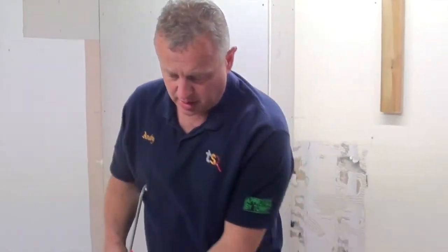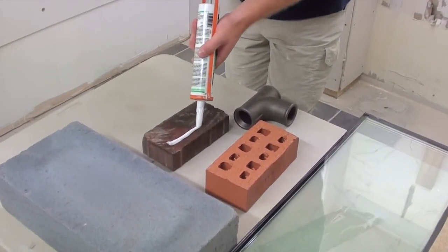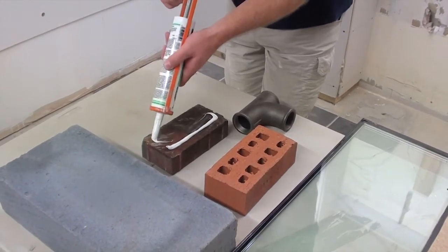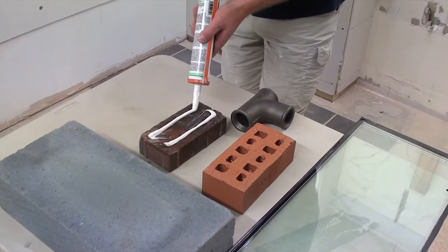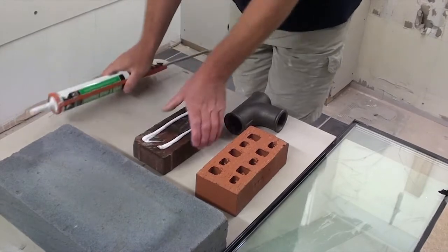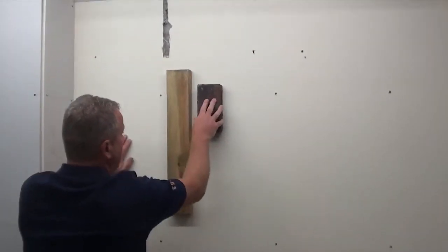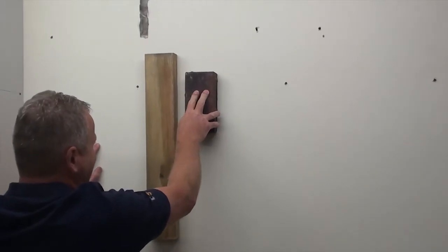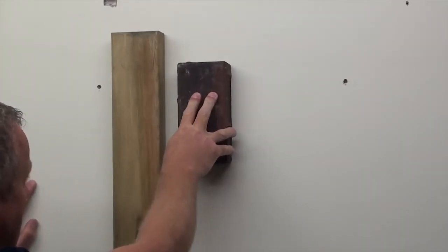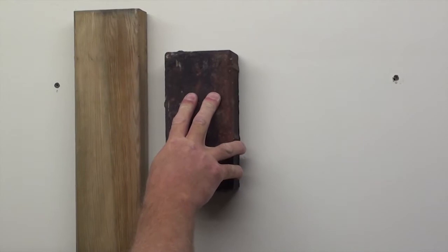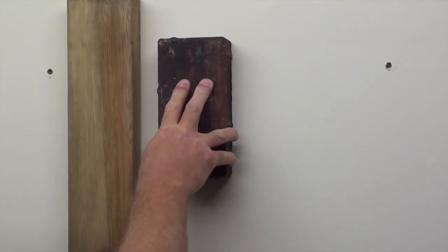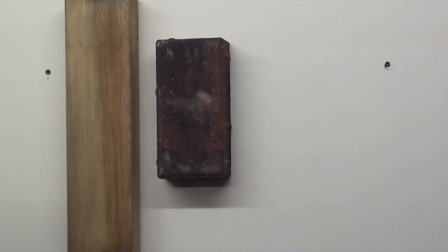Now to show you how good this stuff is, we're using a block paver. Again two lines, get our block paver, place this to the right hand side of our timber. We'll just work this on the wall, hold it in place for a few seconds, let it go and it actually stays there.